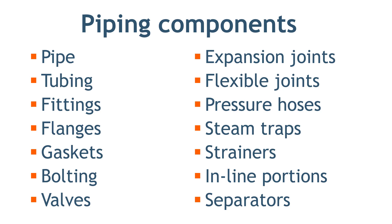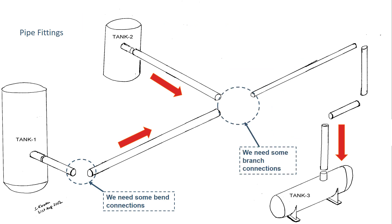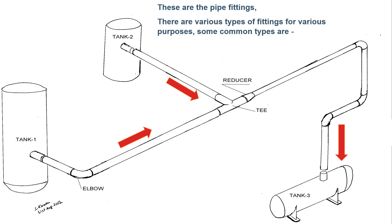Now let's put all these components in our plant. In the first step, we will put pipe fittings to connect our pipes. Elbows, bends, tees, branches, reducers, expanders, couplings, and olets are used to connect pipes of different sizes and from different directions. All our pipes are now connected, but they are still not connected with the tanks.